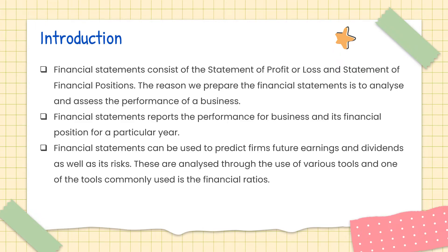Financial statements consist of the statement of profit or loss and the statement of financial position. These are the statements you have learned to prepare in previous chapters. The reason we prepare financial statements is to analyze and assess the performance of a business. They report business performance and financial position for a particular year, and can be used to predict a firm's future earnings, dividends, and risks. One common tool used for this analysis is financial ratios.